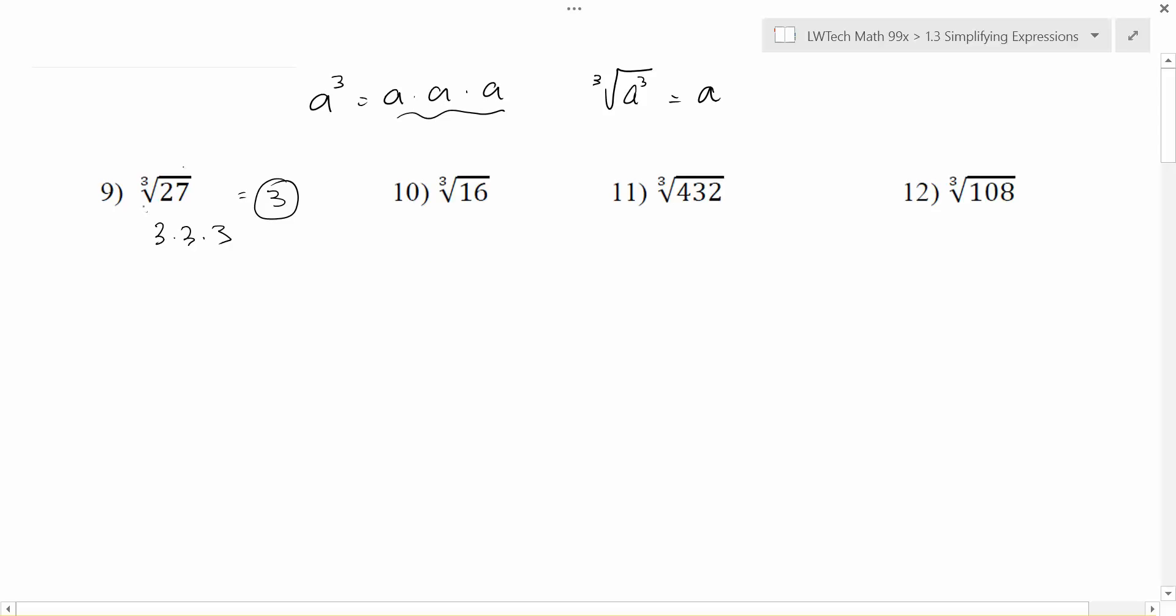Just like when we did square roots, and this is true of any radical, as soon as you figure out what number multiplies by itself the appropriate number of times, we write it outside and then that radical is completely gone as part of the answer.